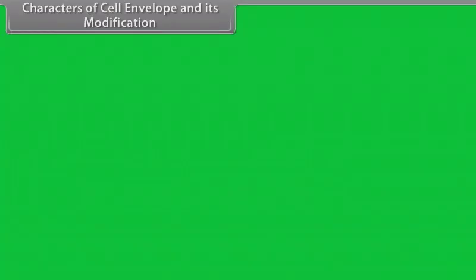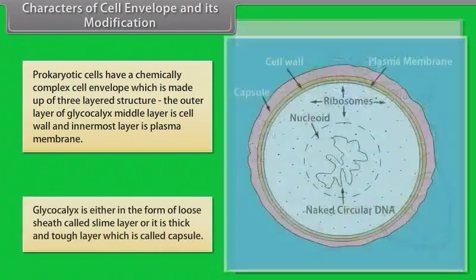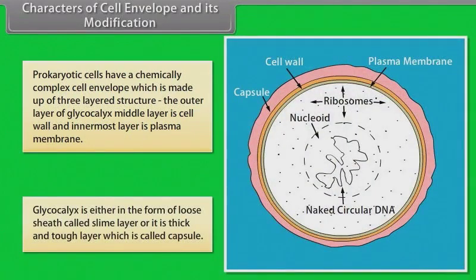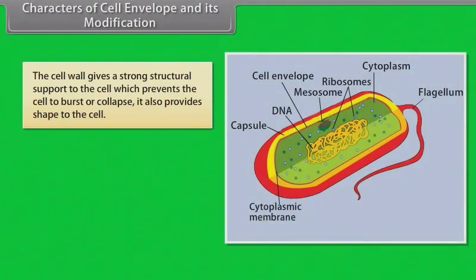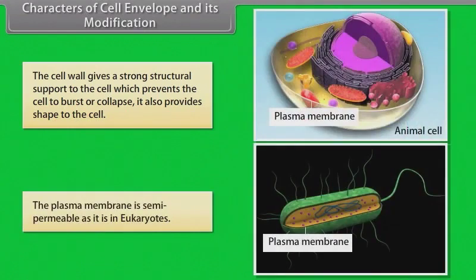Prokaryotic cells have a chemically complex cell envelope made up of a three-layered structure: the outer layer of glycocalyx, the middle layer is the cell wall, and the innermost layer is the plasma membrane. Glycocalyx is either in the form of a loose sheath called slime layer, or a thick and tough layer called capsule. The cell wall gives strong structural support, preventing the cell from bursting or collapsing, and also provides shape. The plasma membrane is semi-permeable, as it is in eukaryotes.